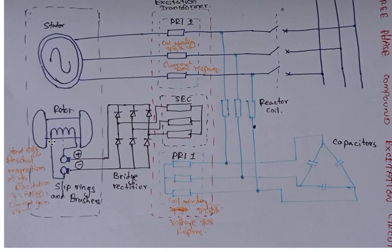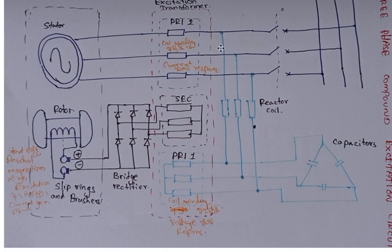What happens now is that there is residual magnetism inside the rotor. When we start the generator, this residual magnetism is used to create a rotating magnetic field in the rotor. Now there is a rotating magnetic field of the rotor, and that flux cuts the stator winding.